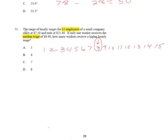it says the range of hourly wages for 15 employees of a small company starts at $7.50 and ends at $21.40. If only one worker receives the median of $8.90, how many workers receive a higher hourly wage?